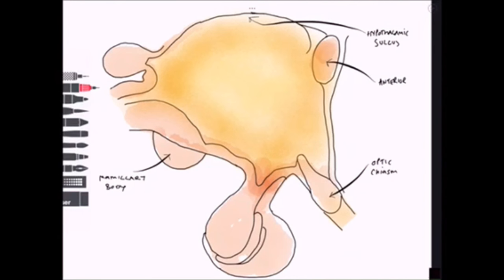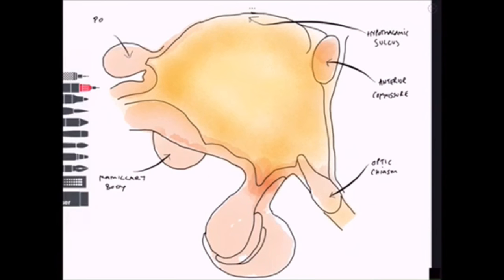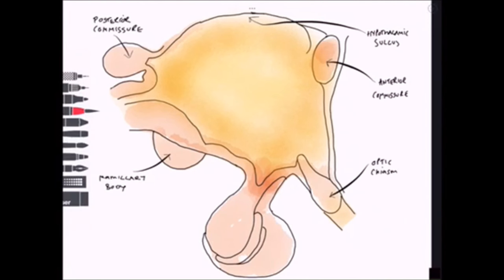We also have the anterior commissure, an extension of the corpus callosum, specifically sharing information between the two temporal lobes. Its partner is the posterior commissure, which shares information between the two hemispheres and is an extension of the corpus callosum posteriorly. Those two landmarks are two superior landmarks worth looking out for.